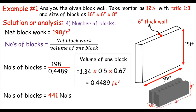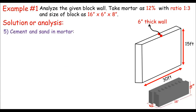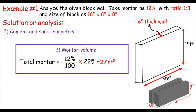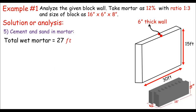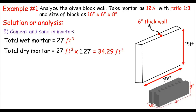Now we calculate cement and sand in the mortar — this is the same process as in plaster analysis. From step two, the mortar volume is 27 cubic feet, which is the wet volume. We convert to dry volume by multiplying by 1.27, giving 34.29 cubic feet of dry mortar. The mortar ratio is 1:3, so the sum of ratio parts is 4.